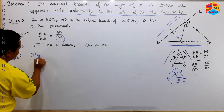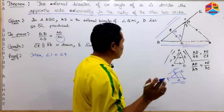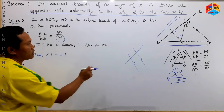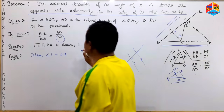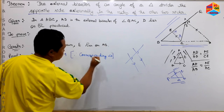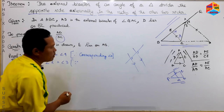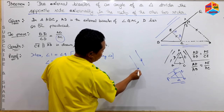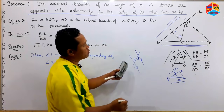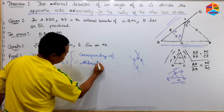We are looking at angle 1 and angle 4. Angle 1 and angle 4 are corresponding angles. We have a series of corresponding angles. Angle 2 and angle 3 are also corresponding angles. This is the parallel relationship of the angles. You can find alternate angles.